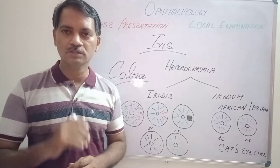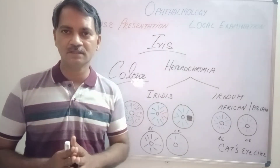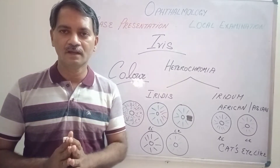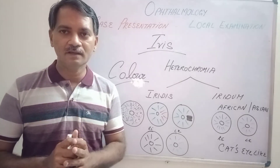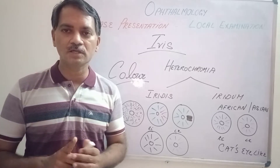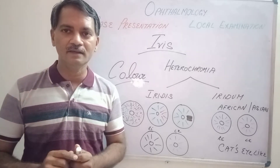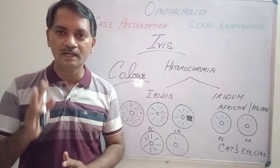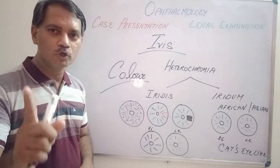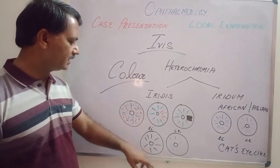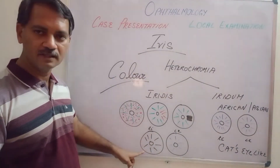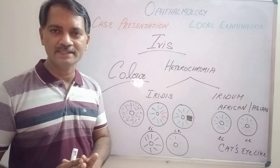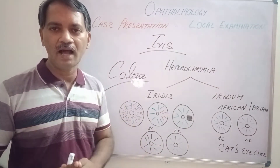One more example for heterochromia iridis singular: suppose an African person, who is supposed to have a black colored iris, is having a light colored iris in only one eye, and in the other eye it is black. That is also called heterochromia iridis. I have drawn here the right eye appearing black iris and the left eye bluish in color — this is also an example for heterochromia iridis.